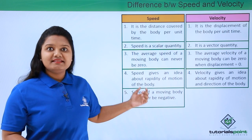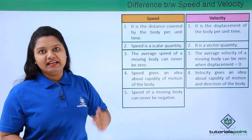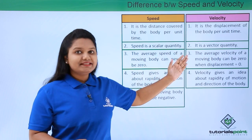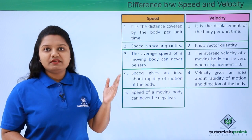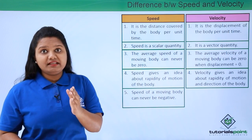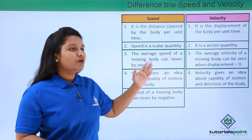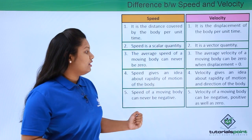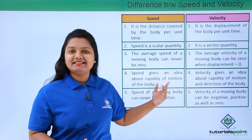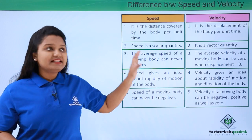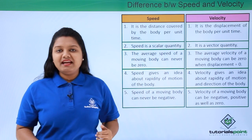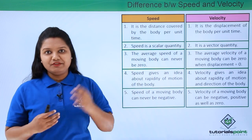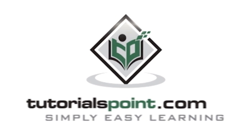The speed of a moving body can never be negative, since the distance covered by a body can never be negative. But in the case of velocity, since it is concerned with displacement, the displacement can be positive, negative, or zero, and accordingly the velocity of the body can be negative, positive, or zero. These are the key points which differentiate speed from velocity.